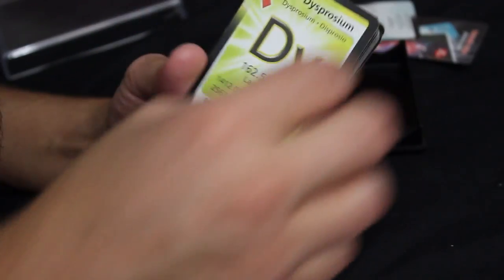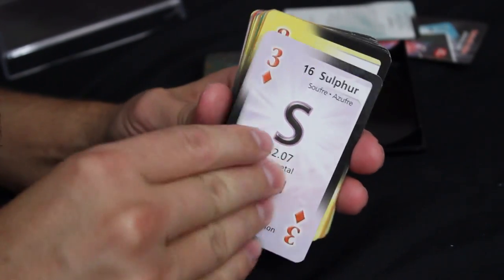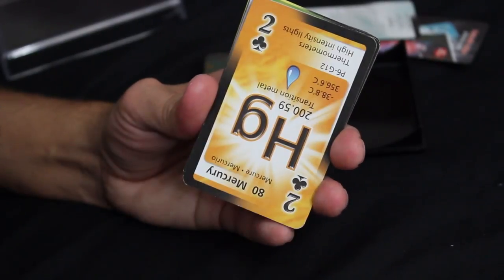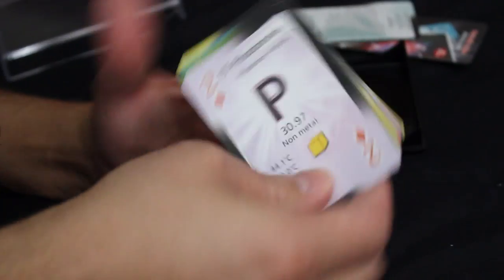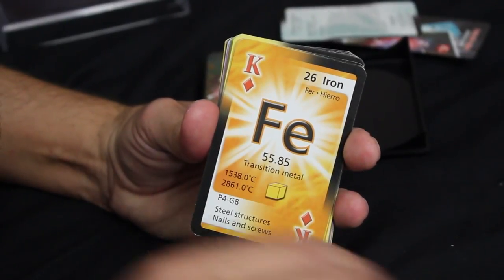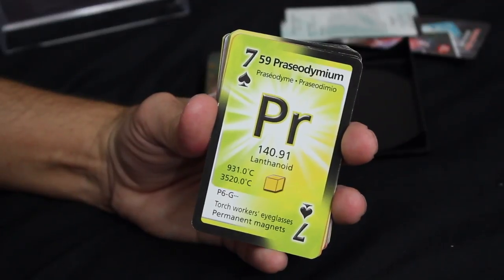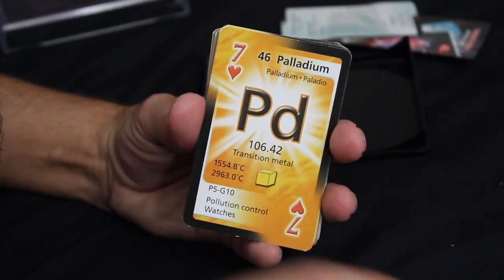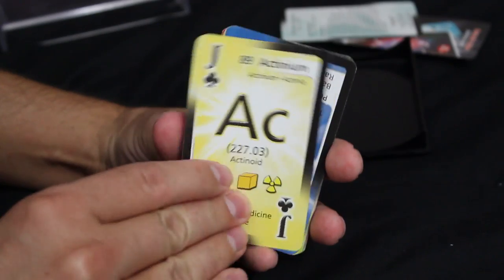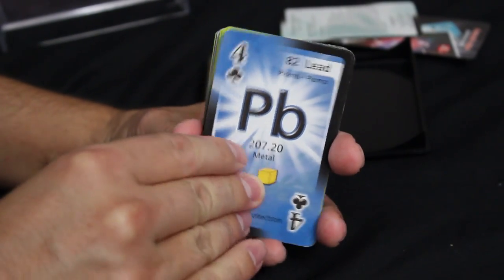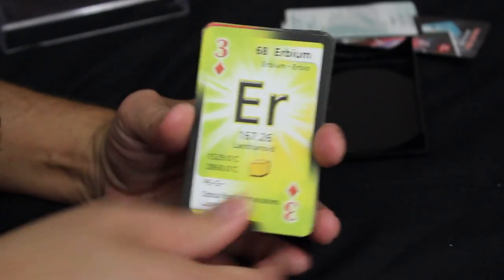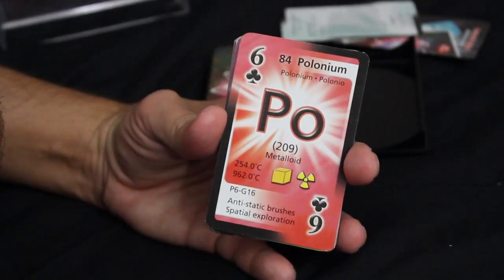Thorium, dysprosium, sulfur, einsteinium, ruthenium, mercury, phosphorus, xenon, helium, francium, iron, praseodymium, palladium, nobelium, osmium, actinium, lead, cerium, carbon, erbium, polonium.